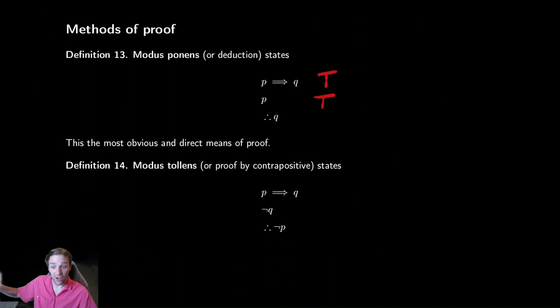Somebody says, I know that if my name is Nick, then I teach at OSU. And then he walks up and goes, hi, my name is Nick. What can you conclude? Well, you can conclude he works at OSU. He told you this if this then this, then told you that the hypothesis was true. You can obviously draw the conclusion. That is what modus ponens is. It's a very direct statement.